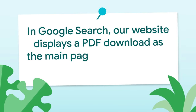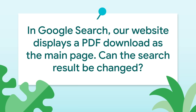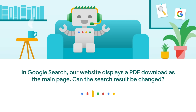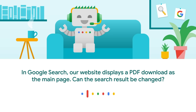Anna asks: the Google search result from our foundation's website needs to be recrawled. It displays a PDF download as the main page. Our website is a Dutch human rights foundation. Can this search result be changed? Hi Anna, I took a look at your website. The reason why other pages are being shown instead of your homepage is that the homepage has a noindex robots meta tag on it. This meta tag will prevent indexing of that page. Once you remove it, things should settle down quickly.